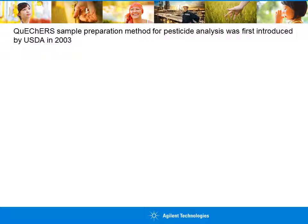In 2003, the USDA introduced a method that allowed for multi-residue analysis of pesticides in a fraction of the time compared to existing methods. The method is known as QuEChERS, which stands for Quick, Easy, Cheap, Effective, Rugged, and Safe. When combined with sensitive and selective detectors like tandem MS, it allows for multi-residue analysis of pesticides with minimal sample cleanup.